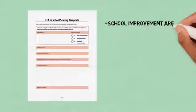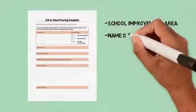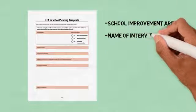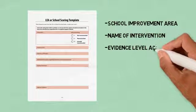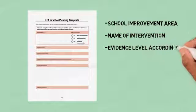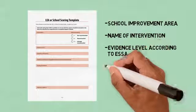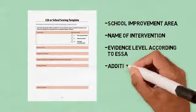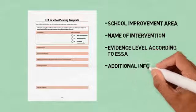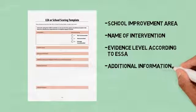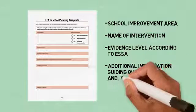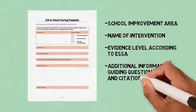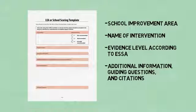The scoring template also includes the evidence level according to ESSA — strong, moderate, or promising — a summary of the research, any additional information that should be considered, guiding questions that may provoke team discussion, and a place to enter citations.